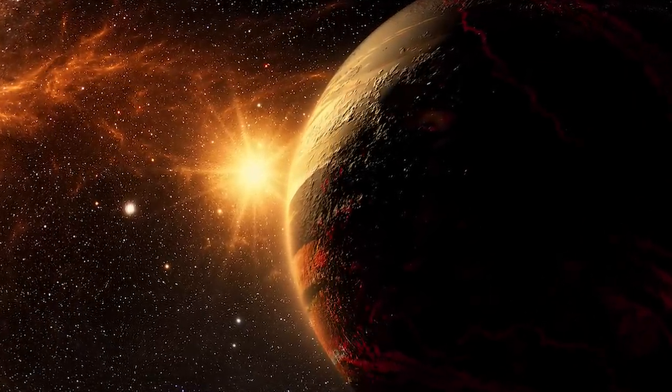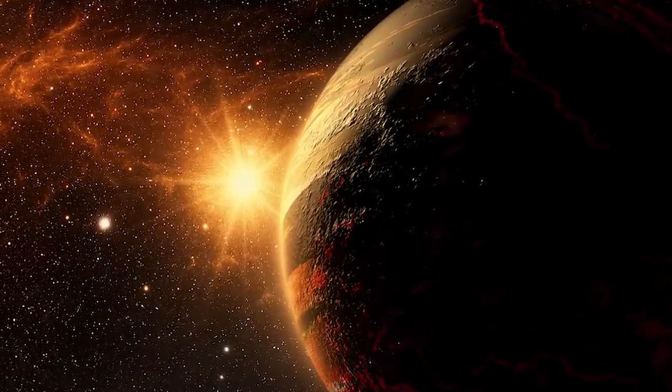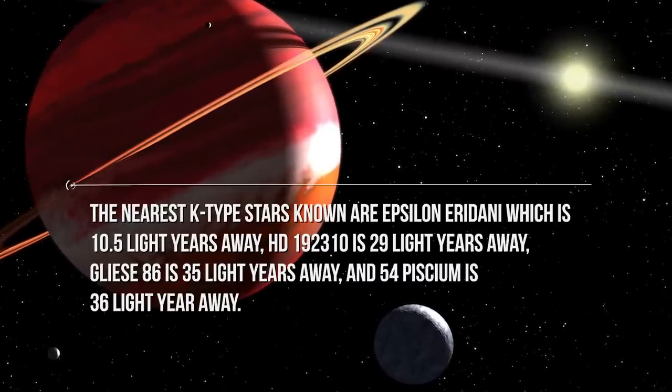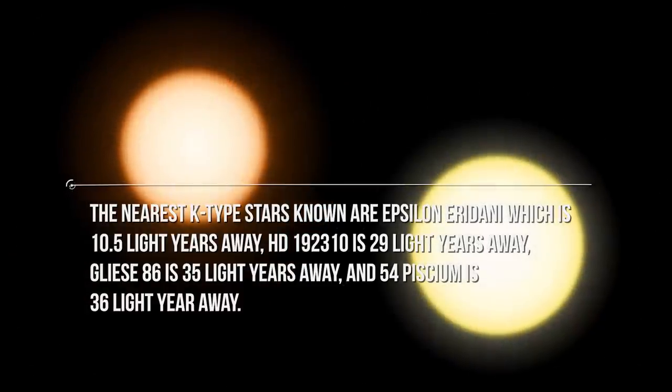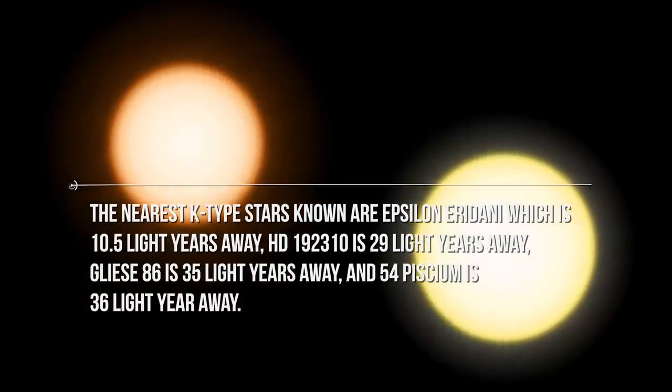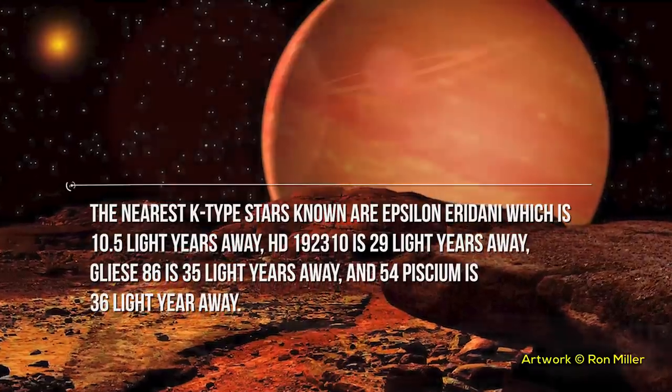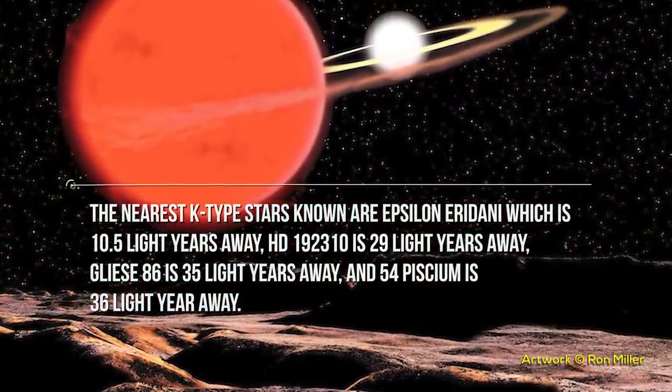The nearest K-type stars known are Epsilon Eridani, which is 10.5 light-years away, HD 192310 is 29 light-years away, Gliese 86 is 35 light-years away, and 54 Piscium is 36 light-years away.